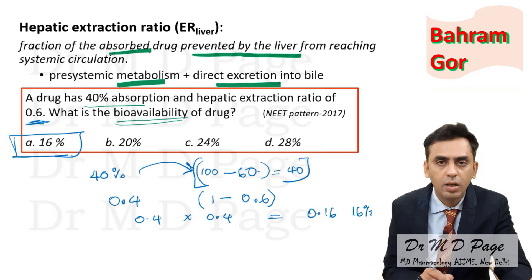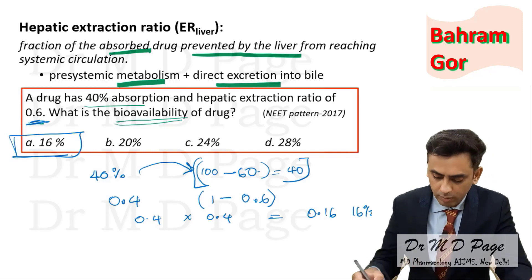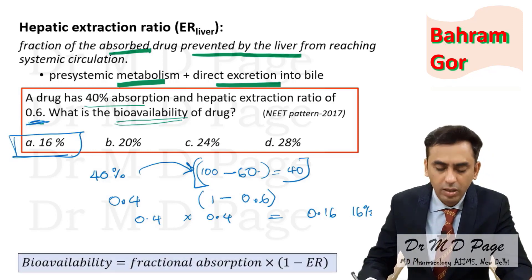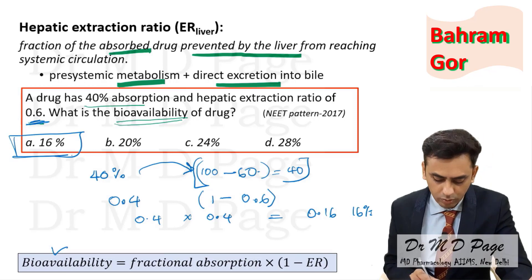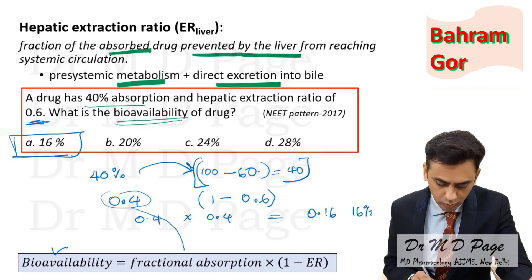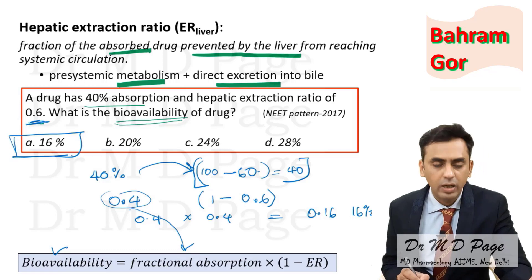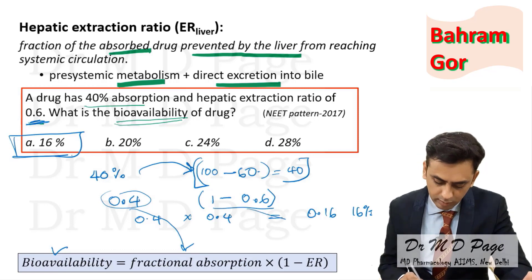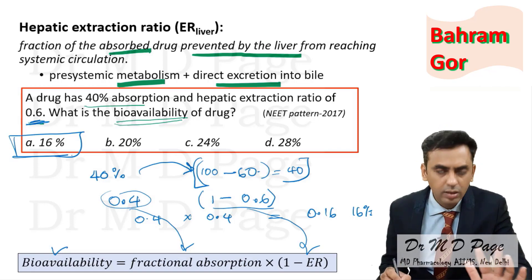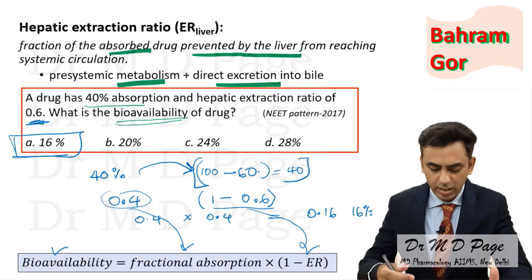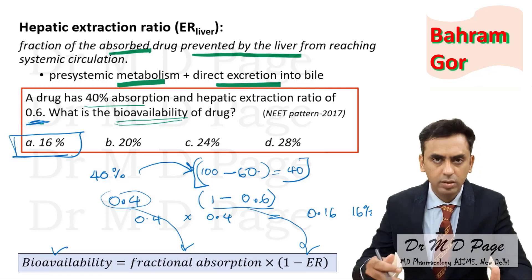The answer is 16%. In mathematical form: bioavailability equals fractional absorption (0.4) multiplied by (1 minus hepatic extraction ratio). Here 0.4 is fractional absorption and 0.6 is the extraction ratio. There is no need to remember the formula — this can very easily be interpreted using logic.